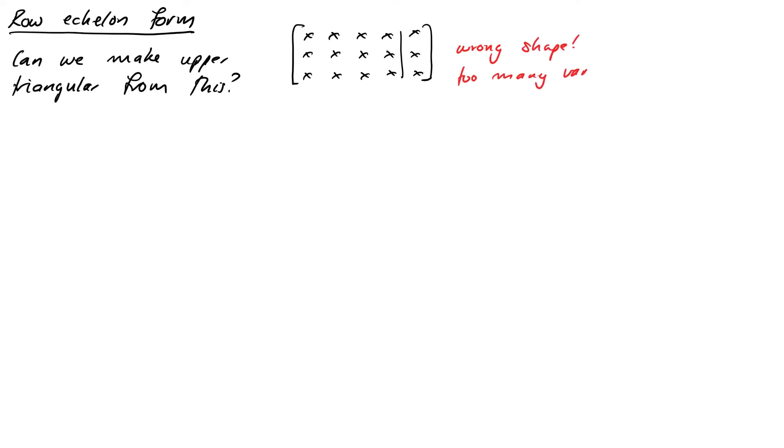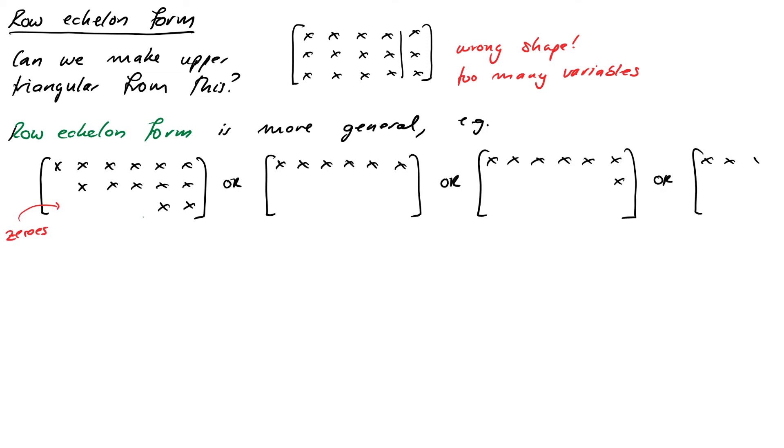Imagine for a second that we've got a system of three equations and four unknowns. Does upper triangular form even exist here? The matrix isn't the right shape so there's no way we can make it into the form we had before. There are too many variables for the number of equations. The equivalent form is called the row echelon form or sometimes just echelon form. Where the stars represent non-zeros. Here are a few examples of matrices in echelon form. They kind of look at that staircase structure of the upper triangular one except the stairs can be wide, you can jump across. Notice that there can be some zeros at the bottom, that's all fine as well.